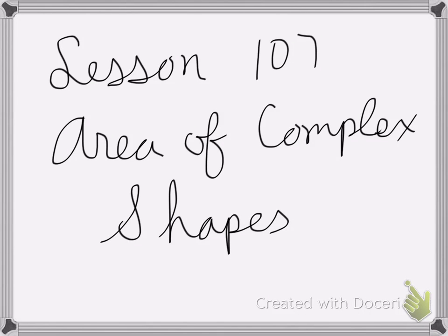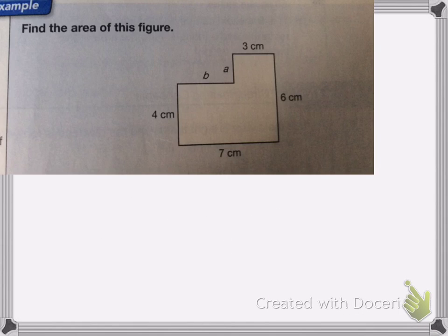Alright, lesson 107 is area of a complex shape. So we've done this with perimeter, now we're going to figure out the area.